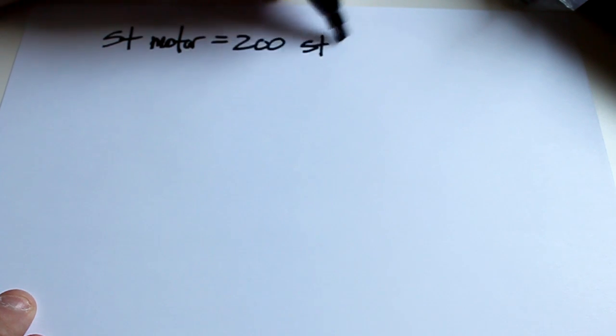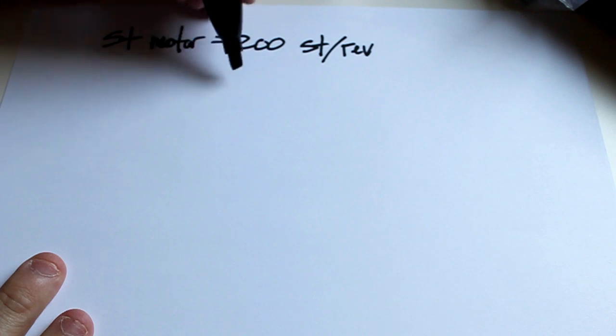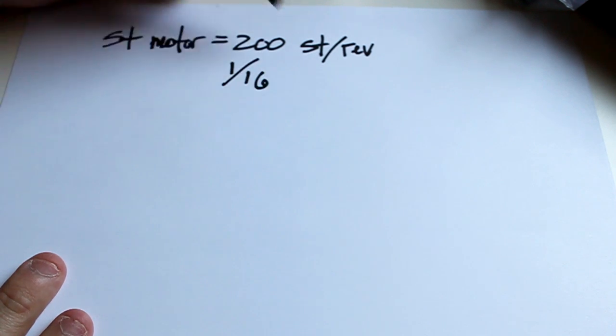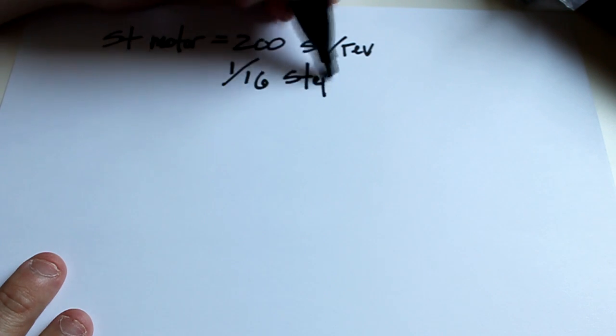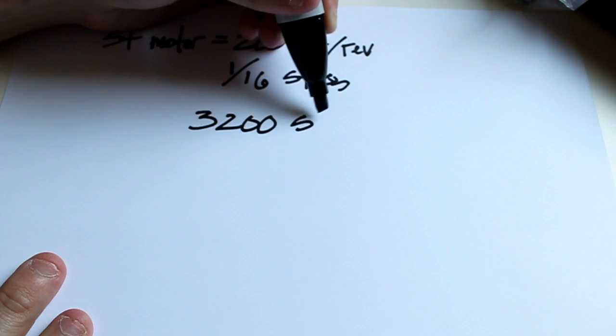Since we know the stepping motor steps per revolution is 200, 200 steps per revolution, we also have the driver set at 1/16th, so for every step we're going to have 16 steps. Multiply those together and you have 3200 steps per revolution.